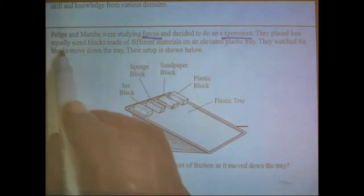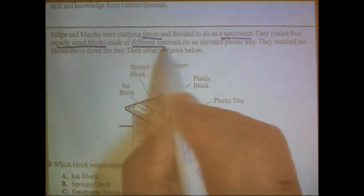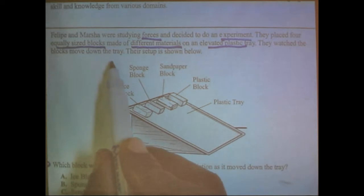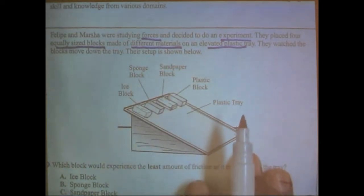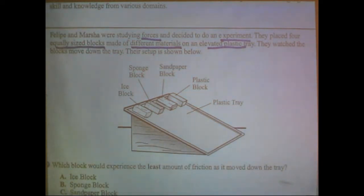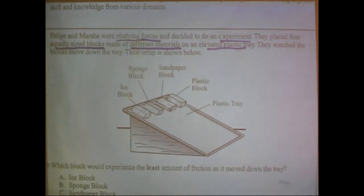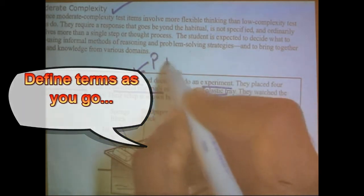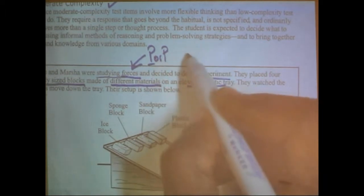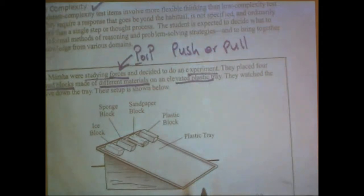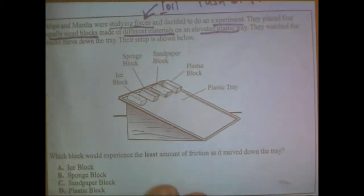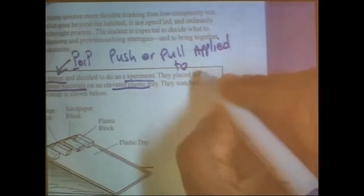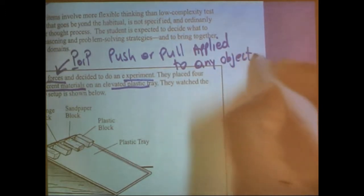Then it says, they place four equally sized blocks. I want to underline that made of different material on an elevated plastic tray. I want to underline that. They watch the blocks move down the tray. Their setup is shown below. So now, do we need to underline that their setup is shown below? No, we don't need that. What we need to do, as a matter of fact, we need to know we're studying forces. We know that force, first of all, I can put me a little note right here and say force is a P or P. Force is a push or pull. That's what force is. And it's basically applied to any object. A push or a pull applied to any object.